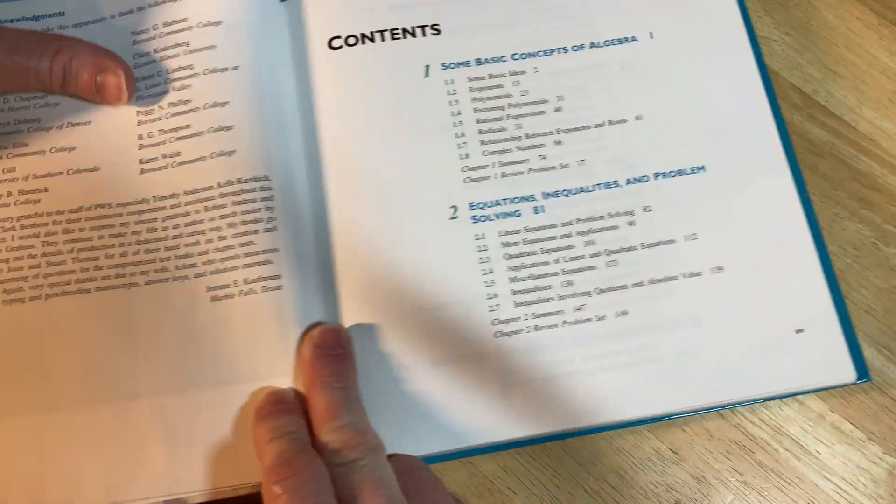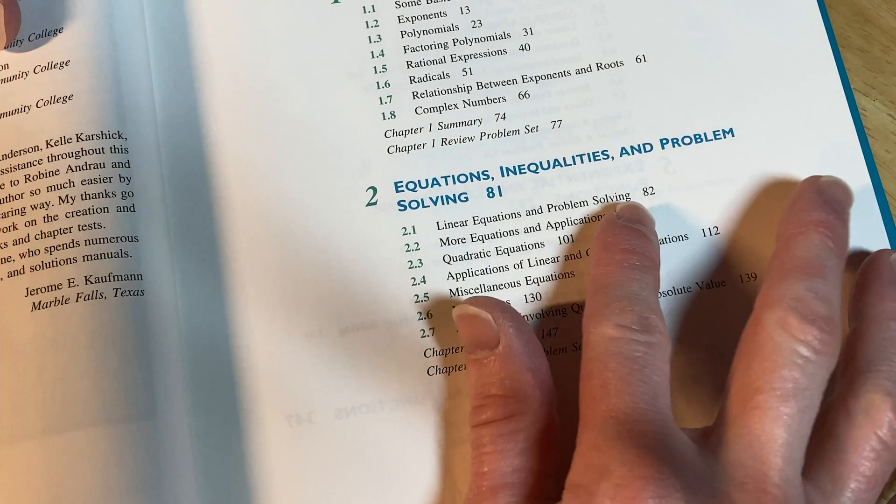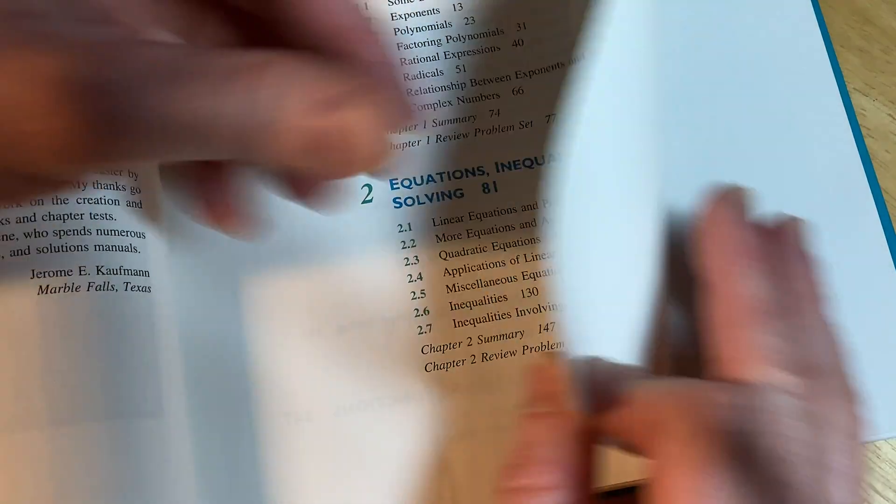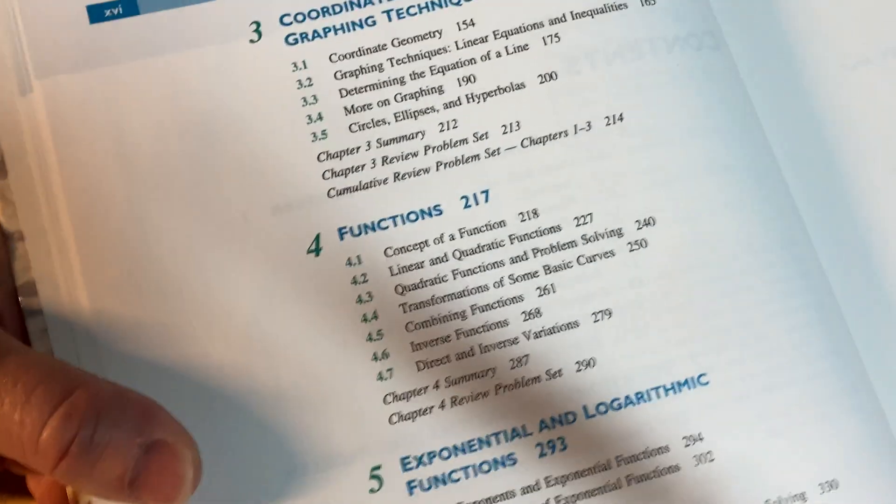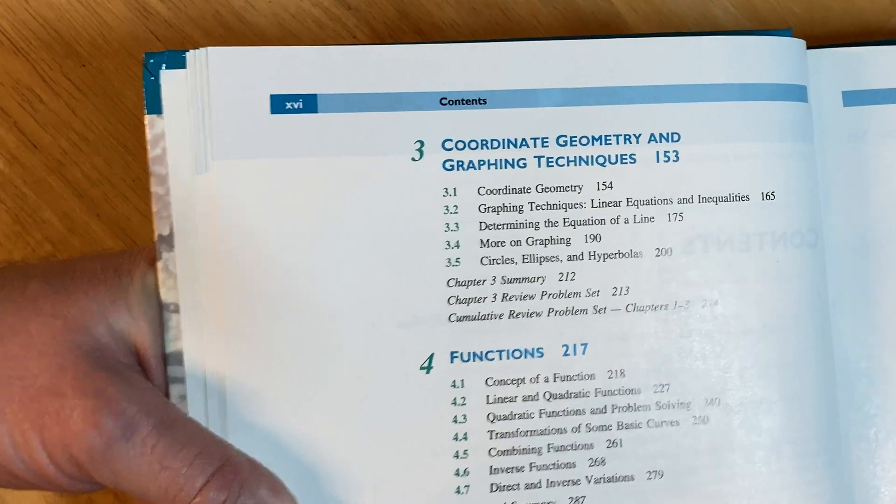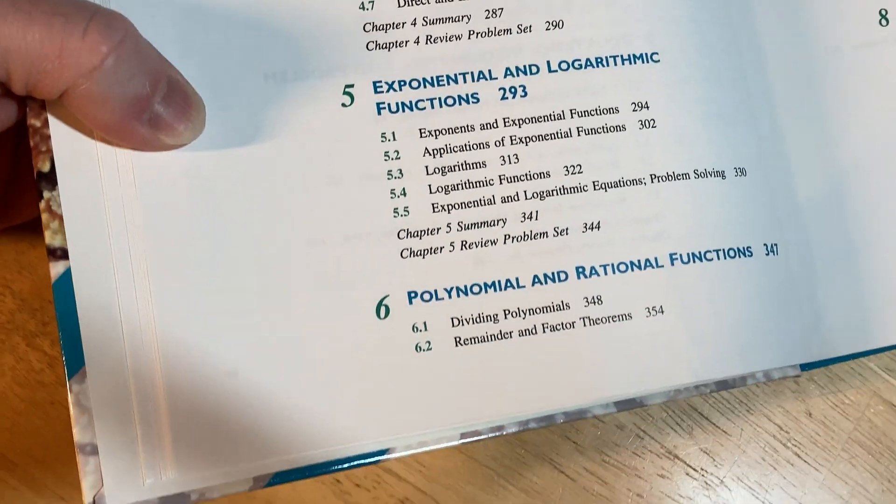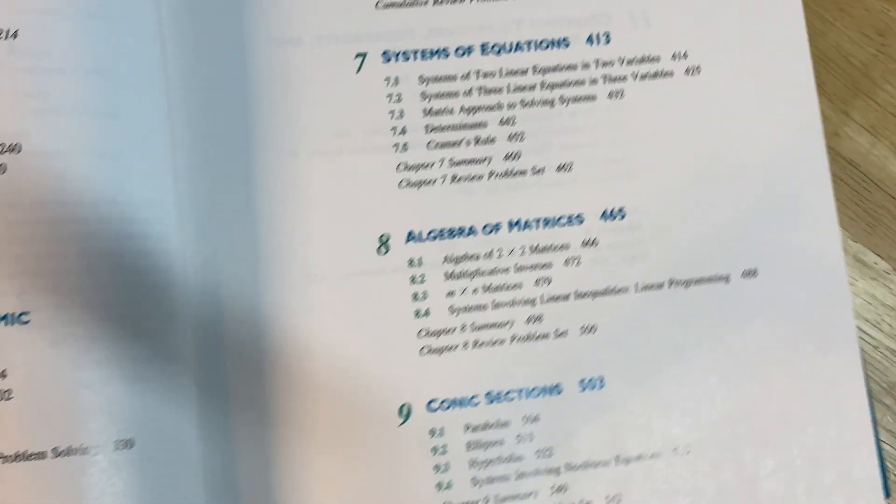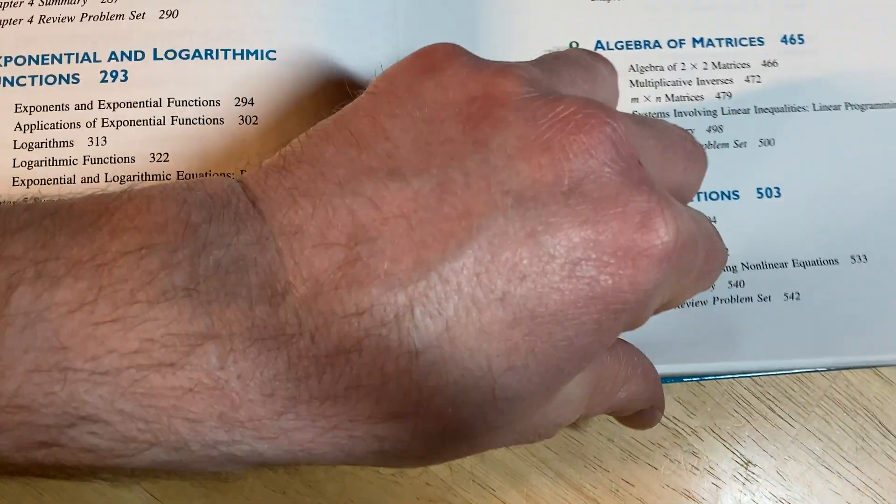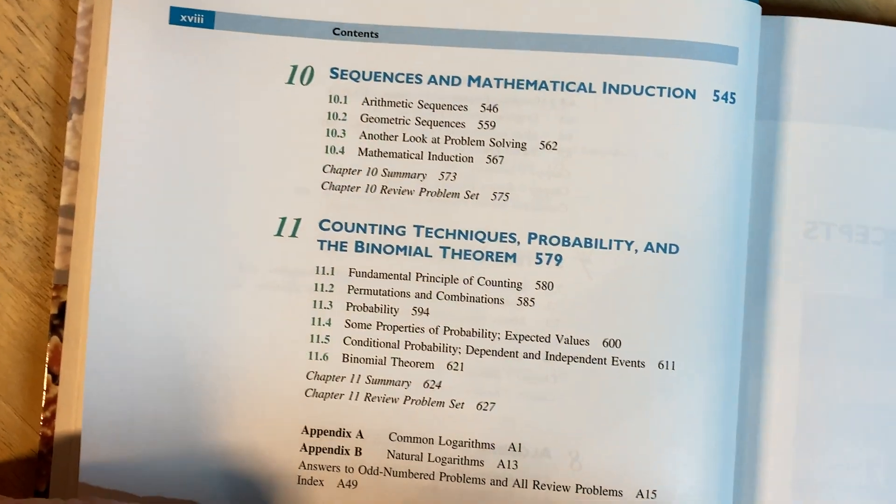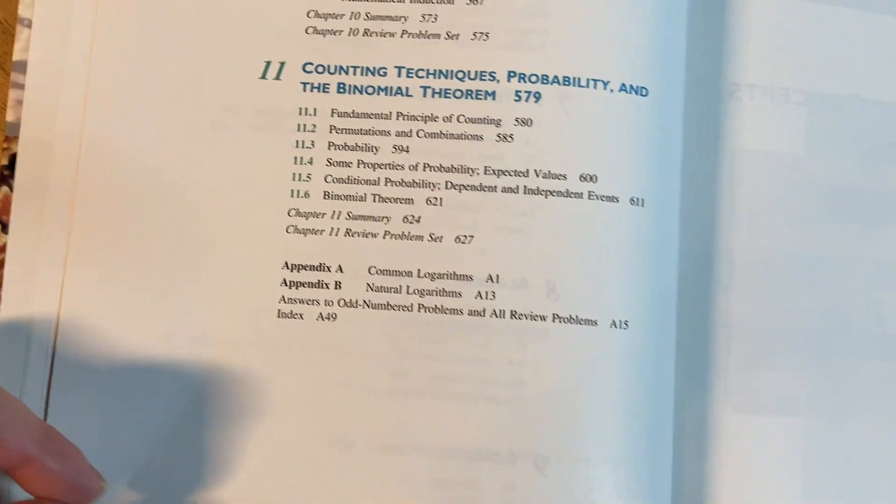Let's take a look at the contents. So it starts with some basic concepts of algebra, equations, inequalities, and problem solving. And then over here we have coordinate geometry and graphing techniques, functions, exponential and logarithmic functions, polynomial and rational functions, systems of equations, algebra of matrices, conic sections. Then we have sequences and mathematical induction, counting techniques, probability, and the binomial theorem.